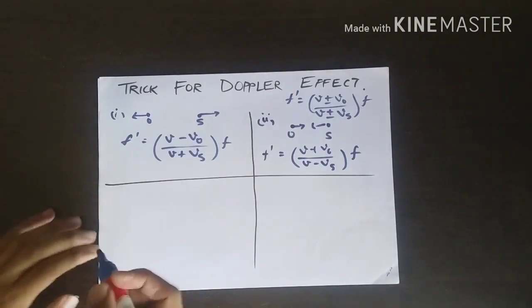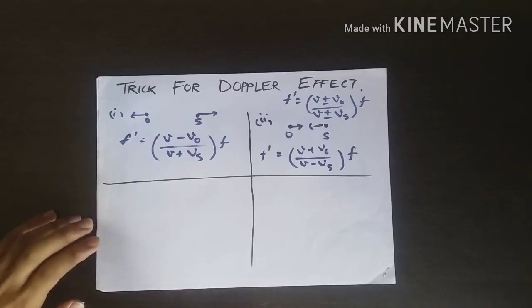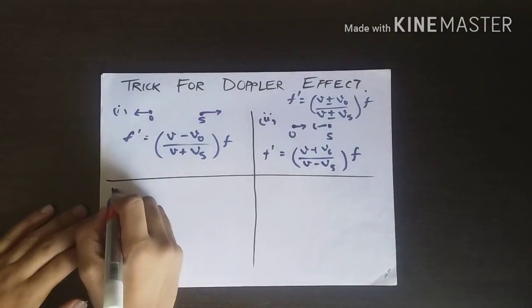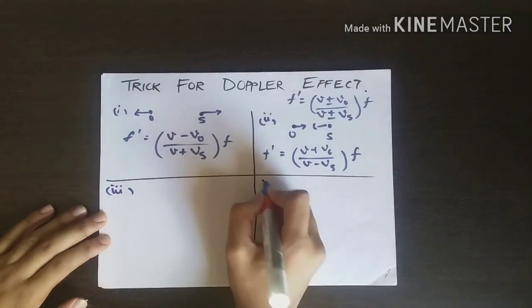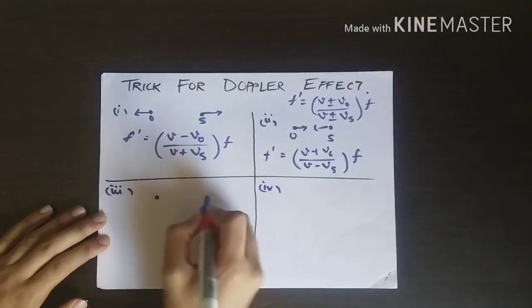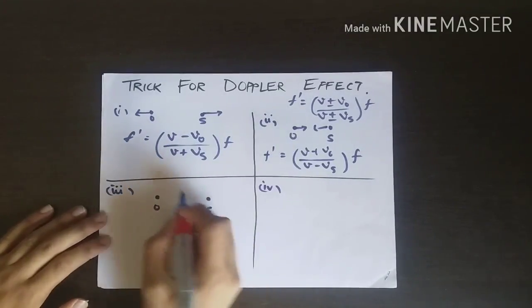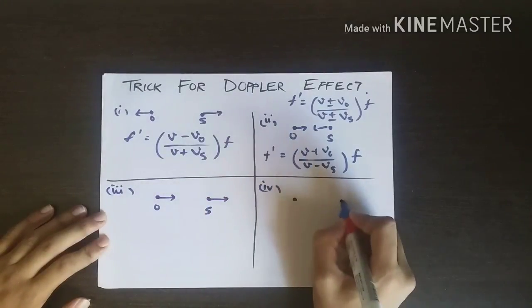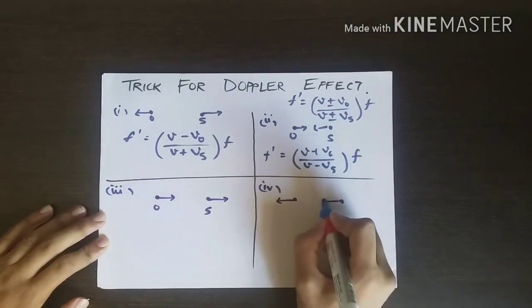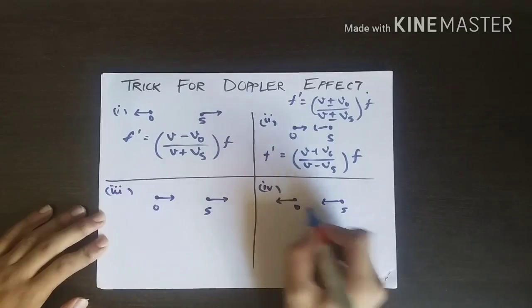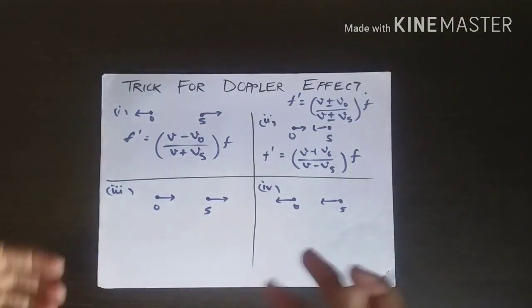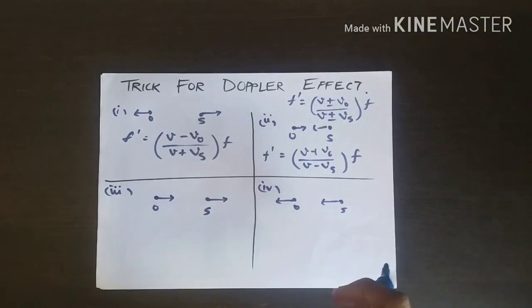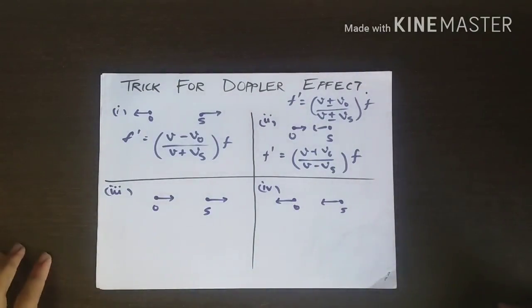The next two cases are what is a problem for everybody: observer follows the source, and source follows the observer. How to remember this? How to decide the signs for these two particular cases? For this, I'd like to bring a little bit of chemistry—just remember the sulfate ion, SO4²⁻.